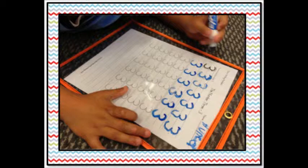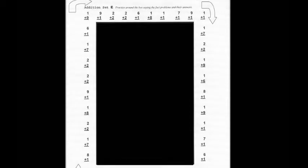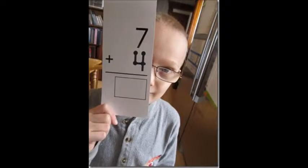Using a dry erase marker, let your child go around and answer every question. After you've checked to make sure every answer is correct, you can have your child practice for maybe the next one or two days orally and independently. Practice makes permanent.